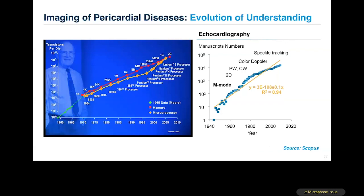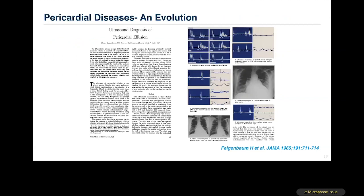Our understanding of constrictive pericarditis using echocardiography has continuously evolved from M-mode to speckle tracking. Each new technology has offered new observations to recognize typical features of constrictive pericarditis in clinical practice. When pericardial disease was first described, Dr. Feigenbaum described pericardial effusion, and the same applications have continued for understanding constrictive pericarditis pathophysiology.